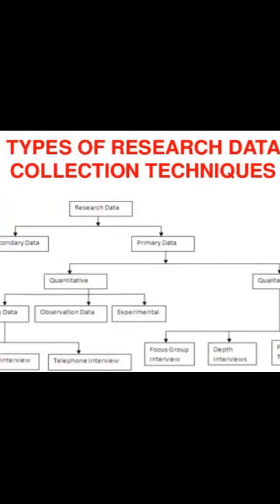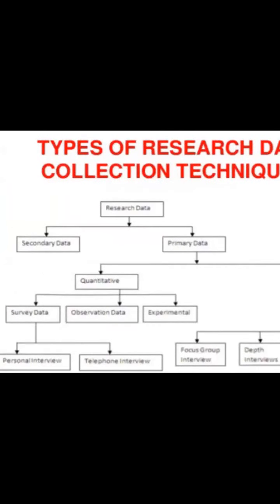If we talk about quantitative data, there is survey data and experimental data. When we survey, we do two types: one is a personal interview — meaning door-to-door — and the other is a telephone interview. So this was the quantitative primary data technique.